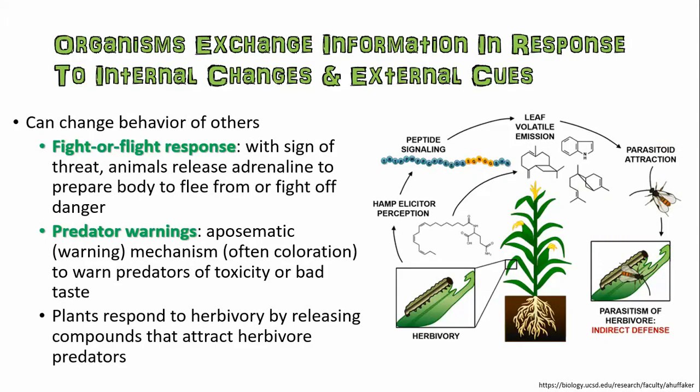Organisms can exchange information, and they can even exchange information between different species. The fight-or-flight response is something you can see anytime you startle an animal or a person. An animal will usually release some type of hormone like adrenaline when it's under threat or perceives a threat, and that will prepare the body to either flee from or fight off whatever danger is present. This results in some characteristic changes — in mammals, fur tends to puff up to try to make the animal look larger, and animals may take on characteristic attack postures as a warning.